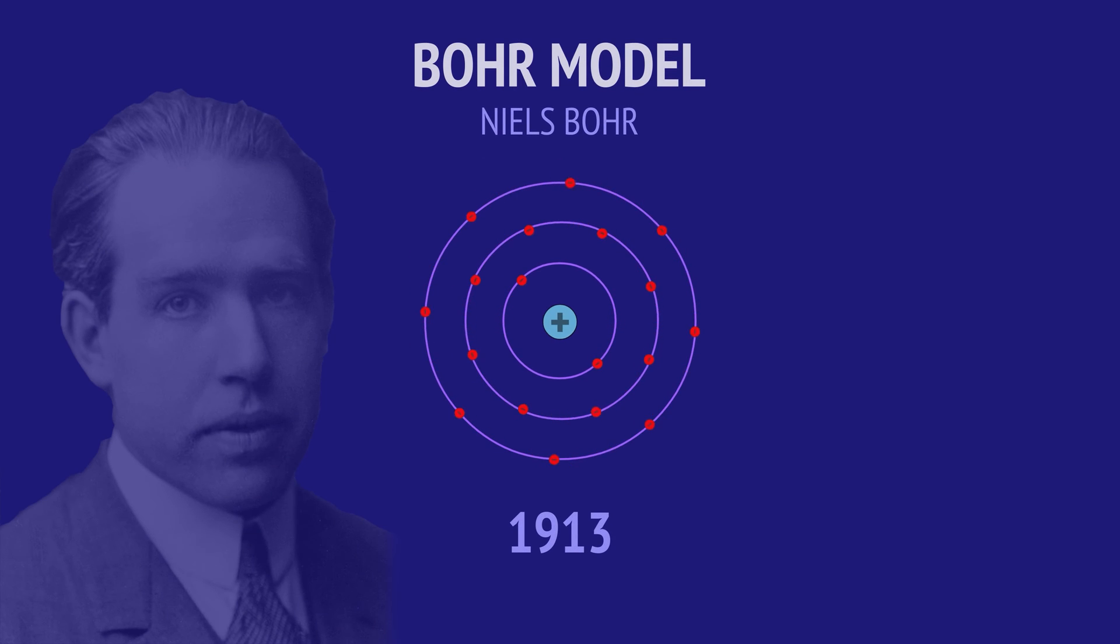In 1913, a Danish physicist named Niels Bohr attempted to solve this issue with the idea of stable electron orbits.